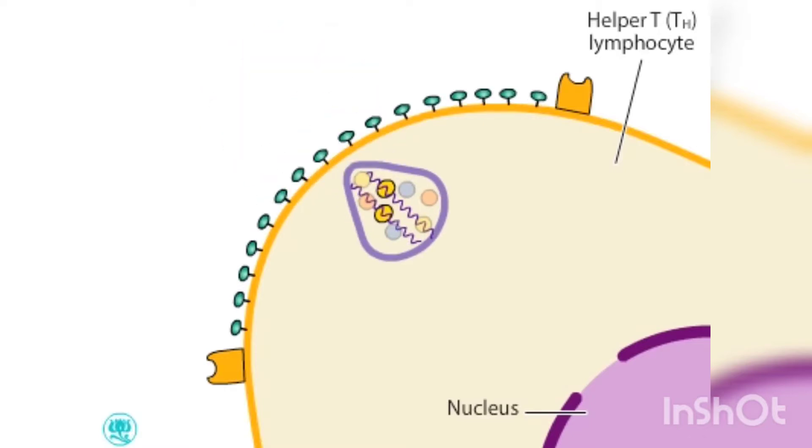During entry, the core uncoats, allowing the viral genetic material, which is RNA, to enter the cytoplasm. In addition to RNA, the virus carries enzymes that participate in the first few stages of viral replication.